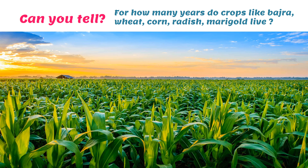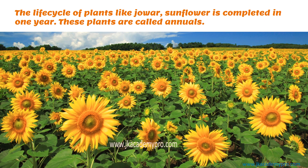Can you tell for how many years do crops like wheat, corn, radish, marigold and others live? Think about it — how long does a farmer take to grow a particular crop, or how long does a crop live? The life cycle of plants like jawar, sunflower, and wheat is completed within one year — they live and they die. So these plants are called annuals.